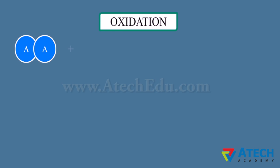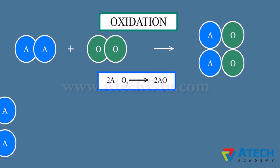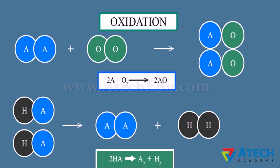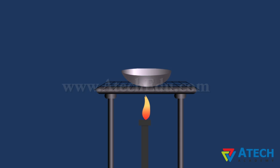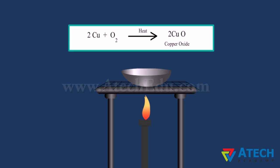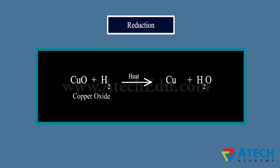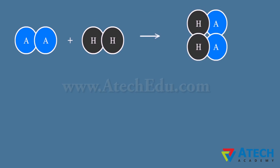Oxidation is a reaction involving gain of oxygen or loss of hydrogen from a substance. The surface of copper powder becomes coated with black copper oxide because oxygen is added to copper, forming copper oxide. Since copper gains oxygen during this reaction, it is said to be oxidized. If hydrogen gas is passed over heated copper oxide, the black coating turns brown as the reverse reaction takes place, and the substance is said to be reduced.